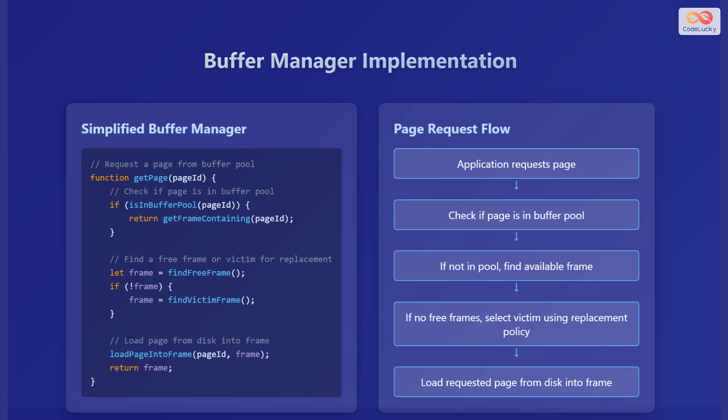To summarize: the application requests a page; the buffer manager checks if the page is in the buffer pool. If not, it finds an available frame. If there are no free frames, it selects a victim using a replacement policy. And finally, it loads the requested page from disk into the frame.